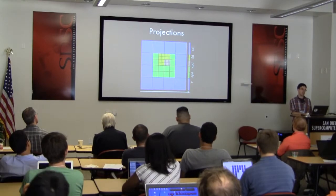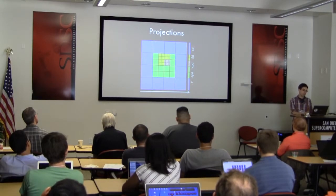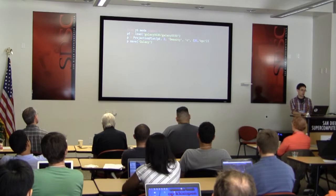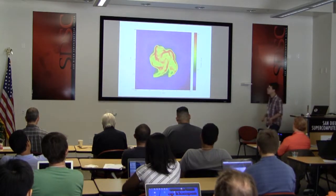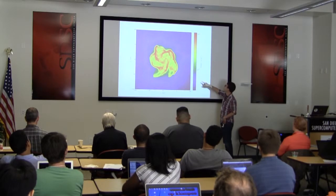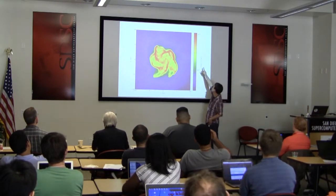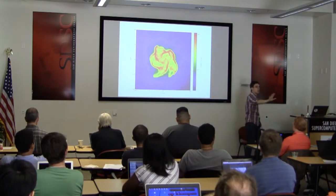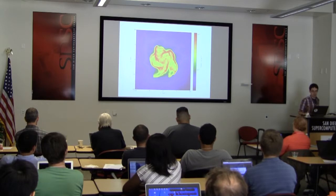We can do the same thing with projections, which are really a line integral through the calculation. We can project through the calculation and calculate either averages or column density. If you project through the same calculation, it returns grams per centimeter squared because it's taking a column density through a calculation that's 20 kiloparsecs on a side.